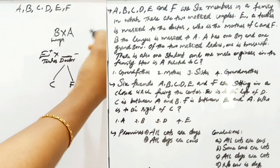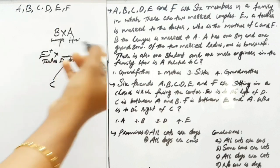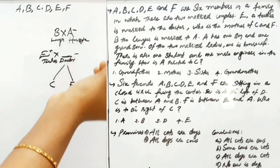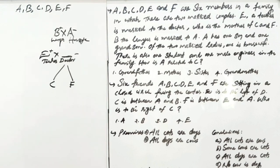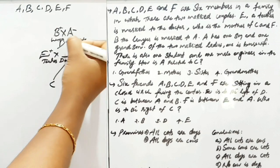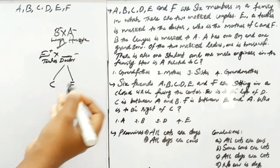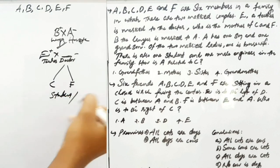One married lady is a housewife. There is also one student and one male engineer in the family. The female student and a male engineer are accounted for. There is a male engineer in this family.